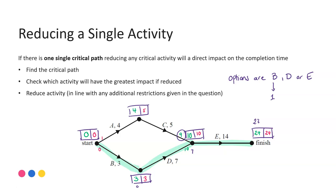If activity D was worth zero, then I have three plus zero — three at this point — but again, nine would have to carry forward, so I'd only save one unit again. If activity E was completely reduced to zero, then my new completion time would be 10, meaning I would save 14 units off my completion time, giving me the best possible outcome.